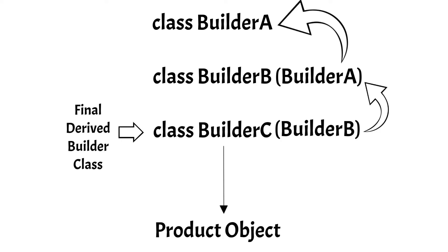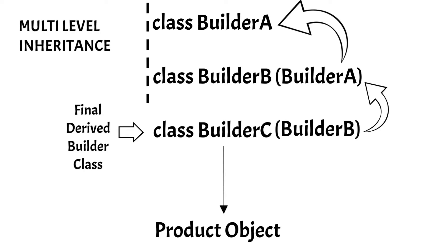As you can see, this is quite similar to builder facets, because in builder facets also we created multiple builders to construct our object. The difference is that in builder inheritance we use multi-level inheritance. Instead of calling each builder separately, we use multi-level inheritance to arrive at one single final builder which has access to all the methods and members of all the parent builders. Now let us go to the editor and code an example.